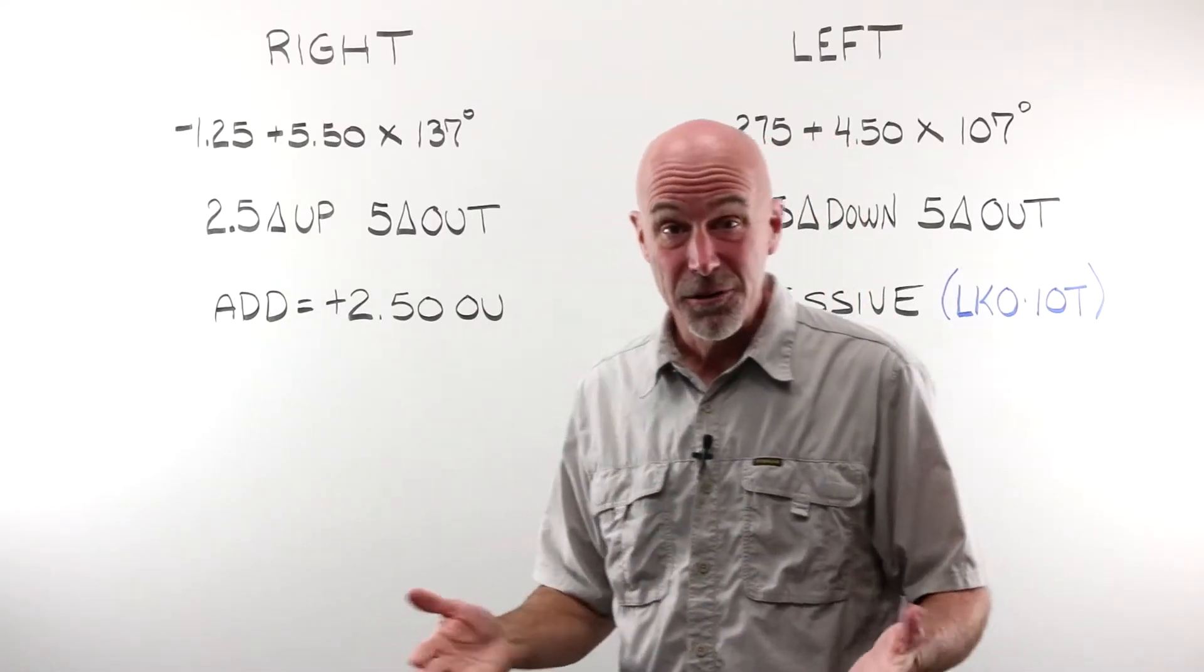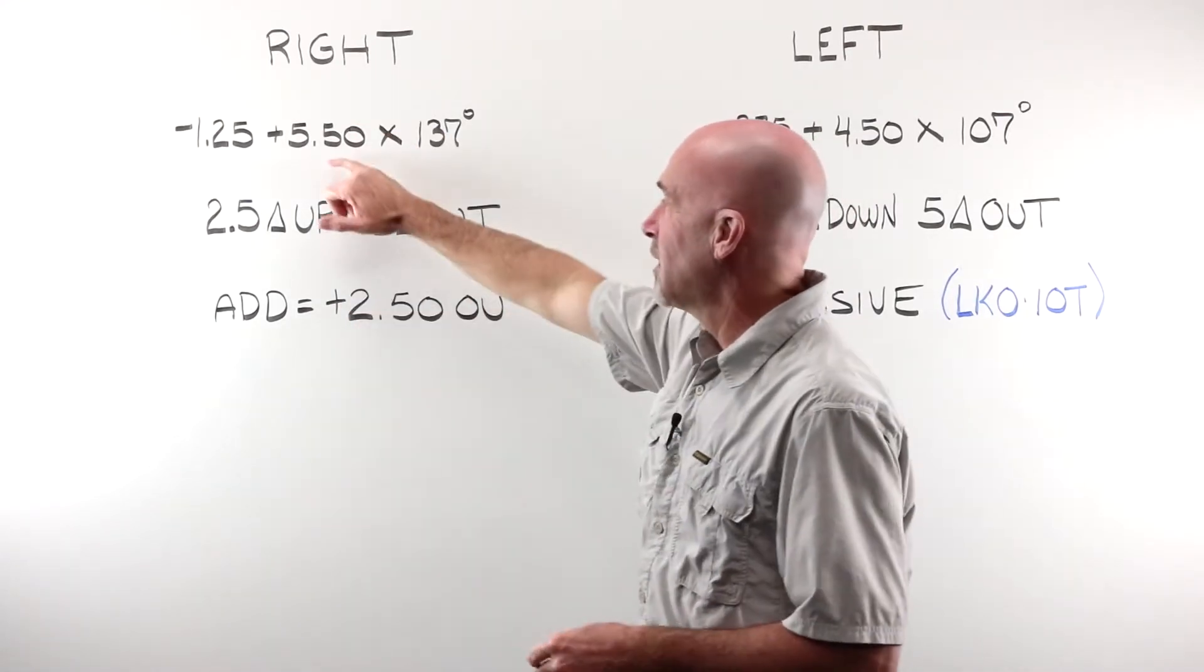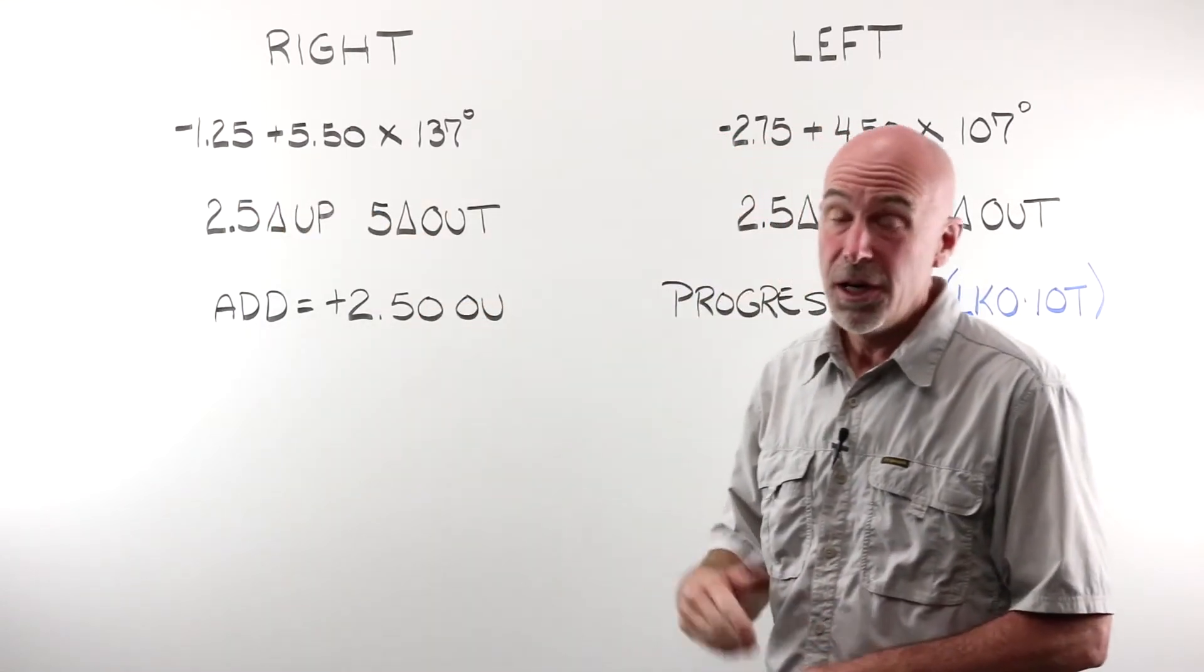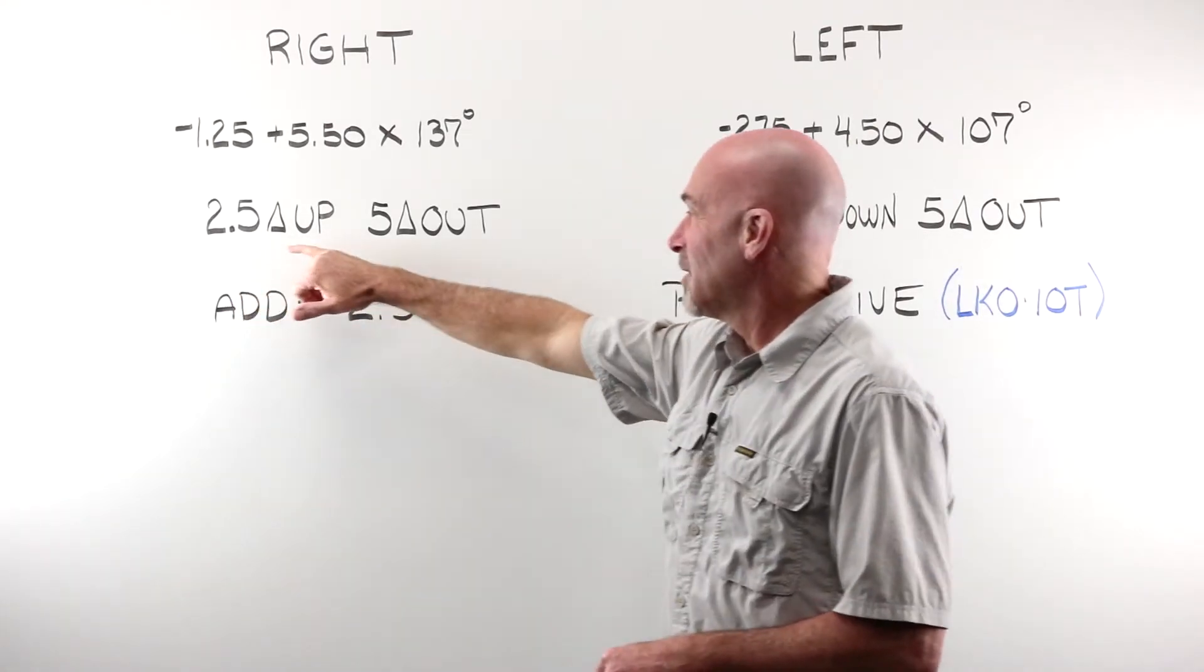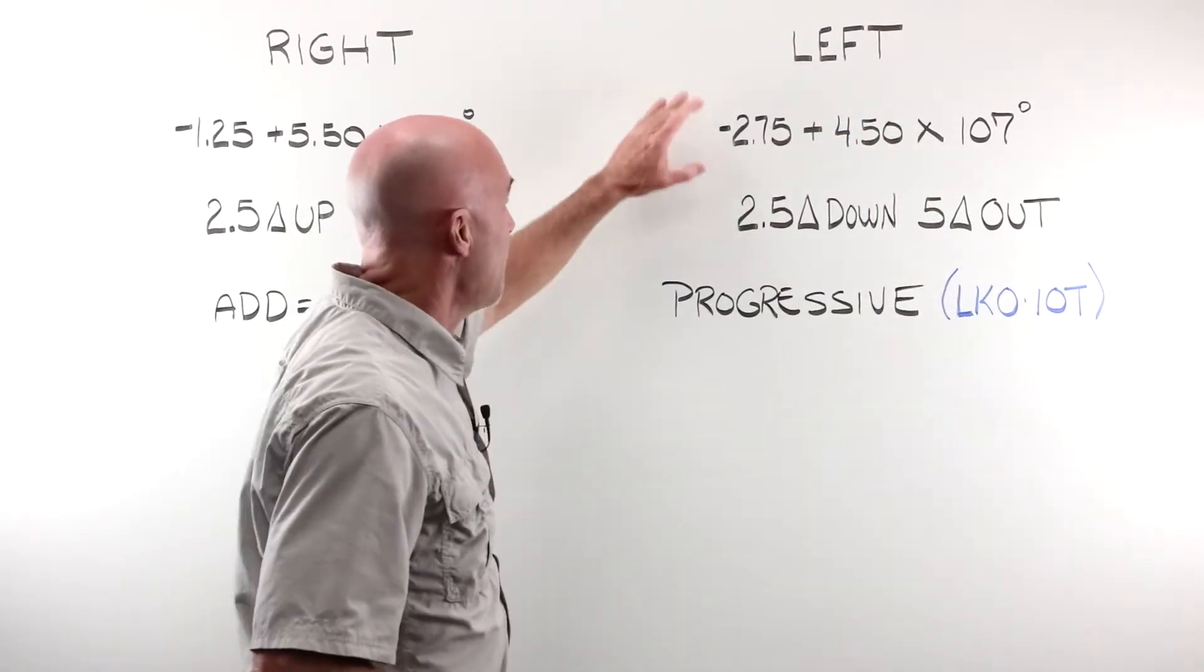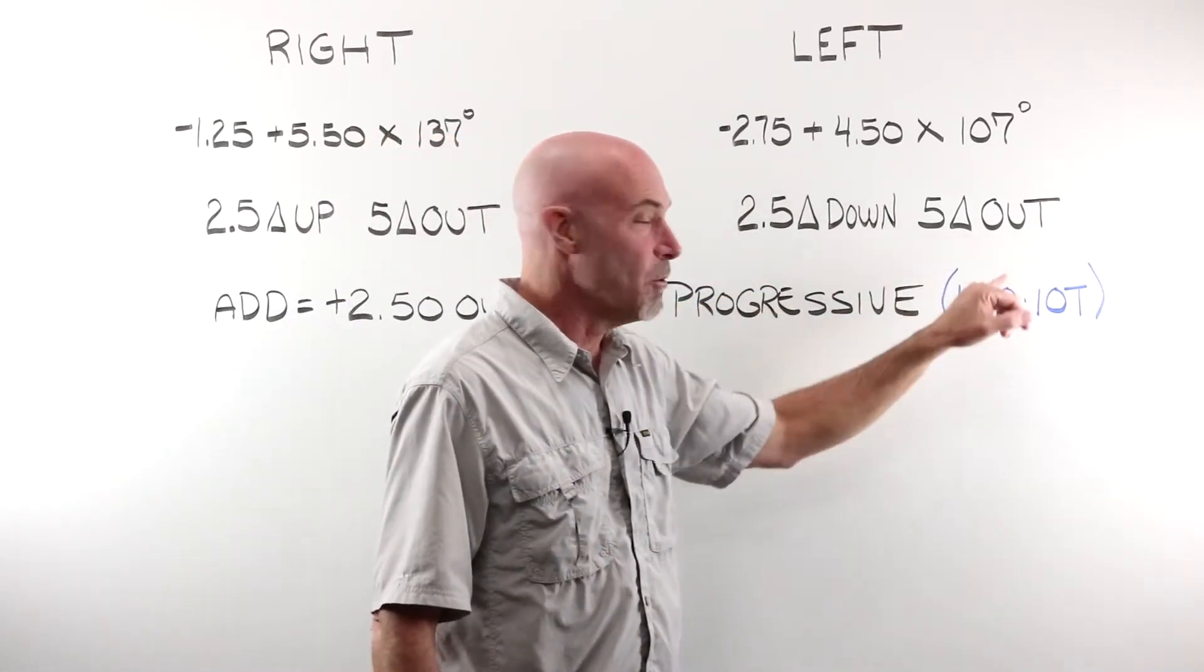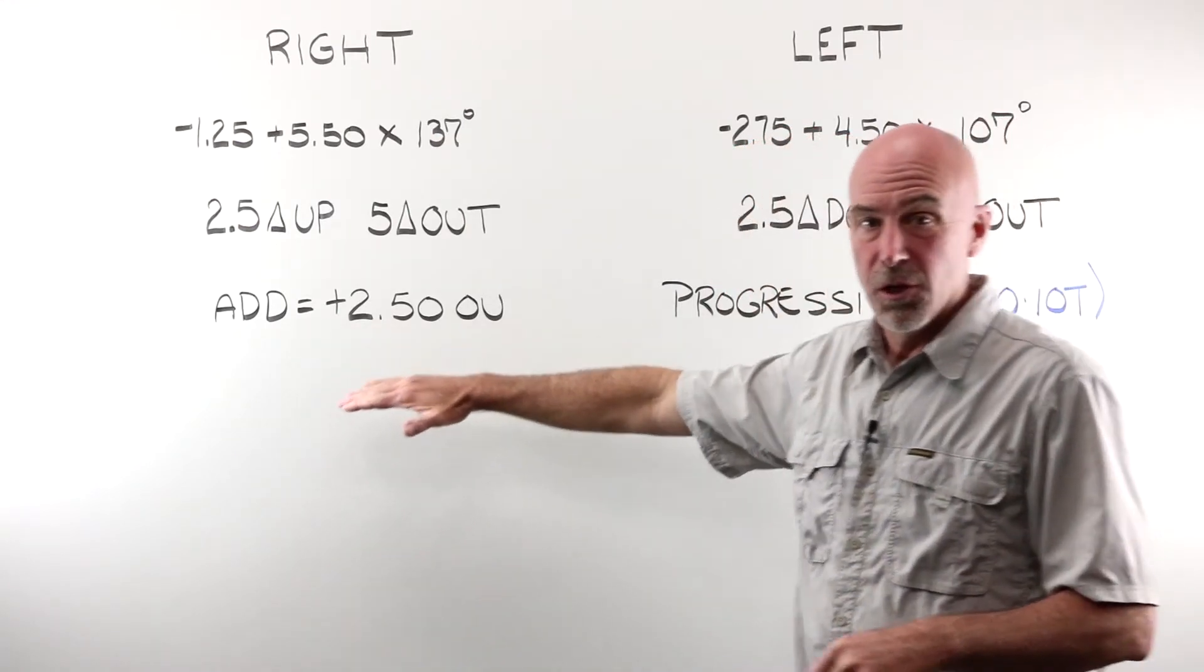Here are the numbers that were sent in with the question. In our right, we have a minus 1.25 plus 5.50 at 137. And yes, we do have a plus cylinder here, and in a few moments, you're gonna find out that it really doesn't matter. We have 2.5 diopters up and 5 diopters of prism out. In our left, we have a minus 2.75 plus 4.50 at 107. We've got 2.5 down and 5 out in the left eye. We have an add of plus 2.50 OU.